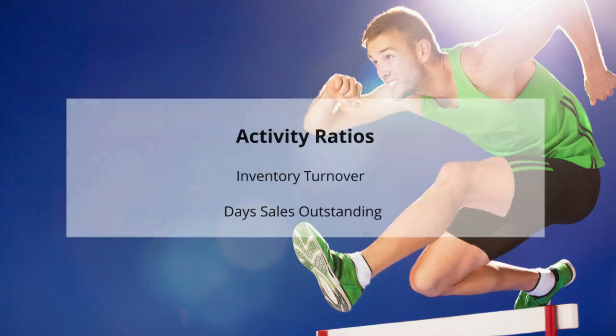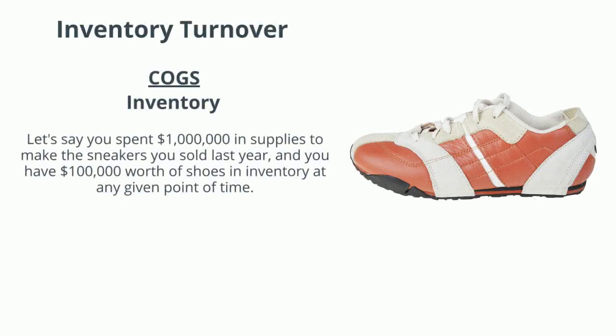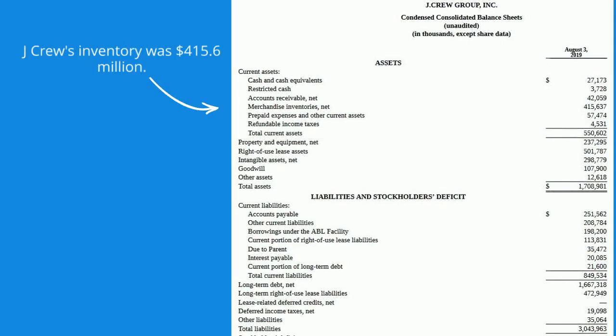Now we're going to talk about activity ratios, including inventory turnover and day sales outstanding. Inventory turnover is cost of goods sold divided by average inventory on hand. If you spent $1 million in supplies making sneakers and have $100,000 in inventory at any given time, your inventory turnover is 10 — pretty good for a sneaker company. J.Crew's inventory was $415.6 million and cost of goods sold was $379.4 million, so J.Crew's inventory turnover was only 0.9.